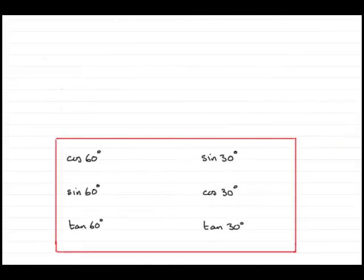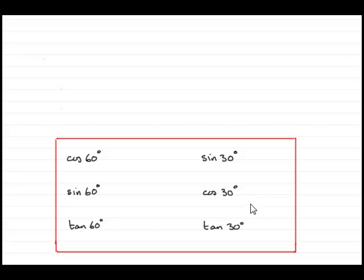In this video tutorial, what I want to show you is how we work out the cos, sine and tan of 60 degrees and also of 30 degrees. To do this, I'm going to encourage you to learn what we call the trig ratios for a 60-30 degree triangle.